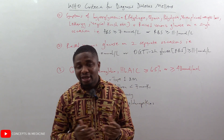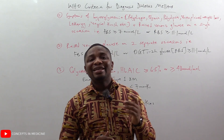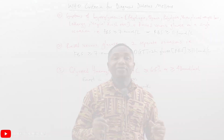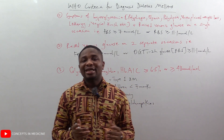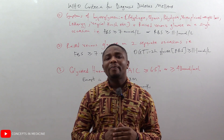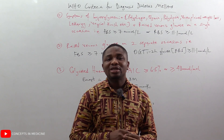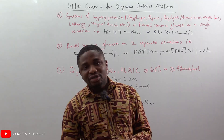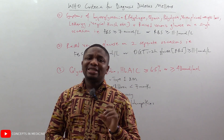Finally, there is the glycated hemoglobin, that is HbA1c. If it is greater than or equal to 6.5% or greater than or equal to 48 millimoles per mole, it is also diagnostic of diabetes mellitus — with the exception of Type 1 diabetes mellitus, children less than seven months of age, hemoglobinopathies, and pregnancy.